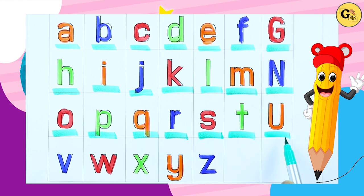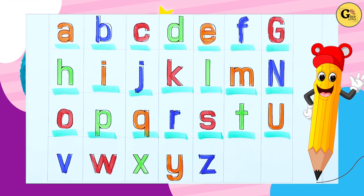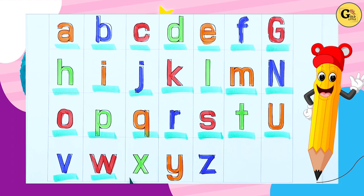U, U for umbrella. V, V for violin. W, W for watch.